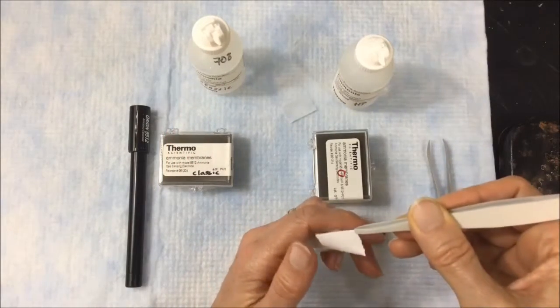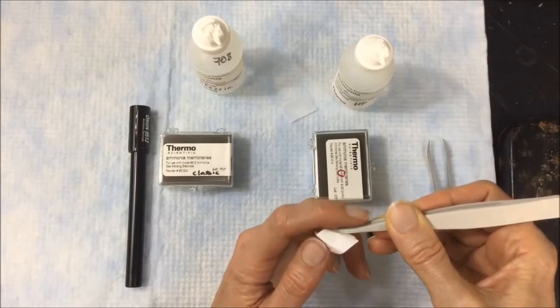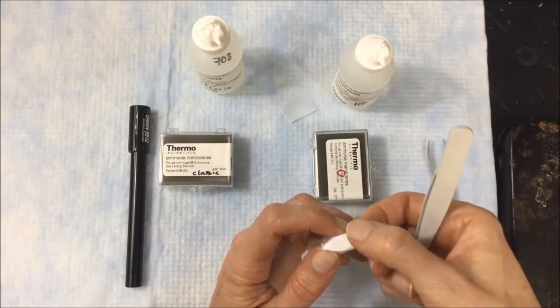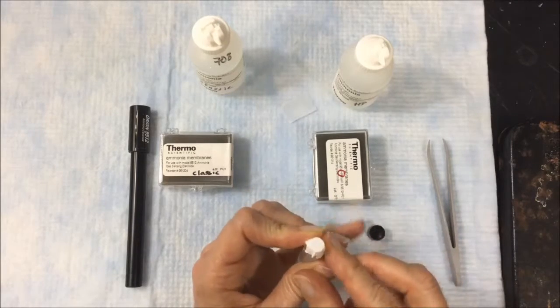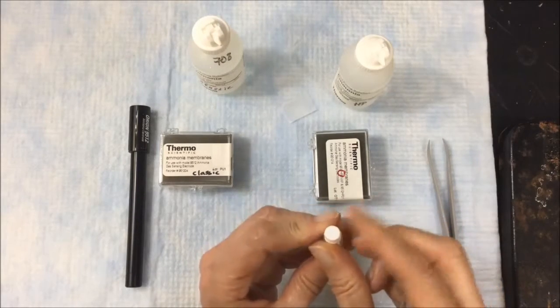I'm going to lay the membrane over the cap here and orient it towards the center. Then I'm going to start smoothing it down like this, getting rid of any wrinkles and making a nice, flat, taut surface.